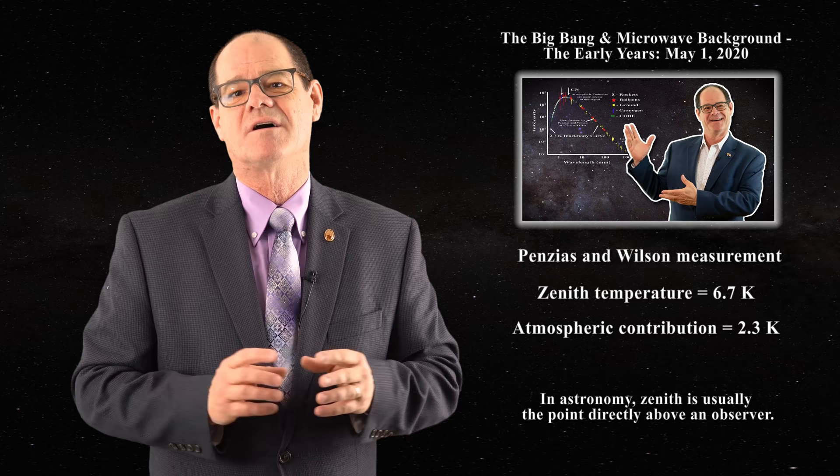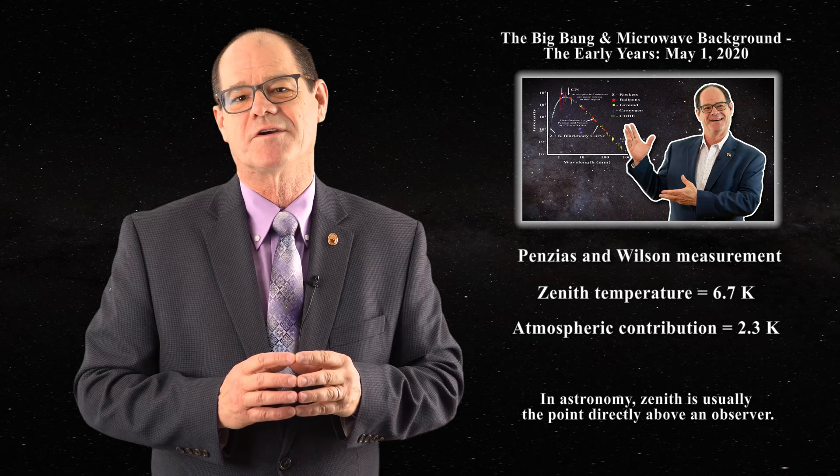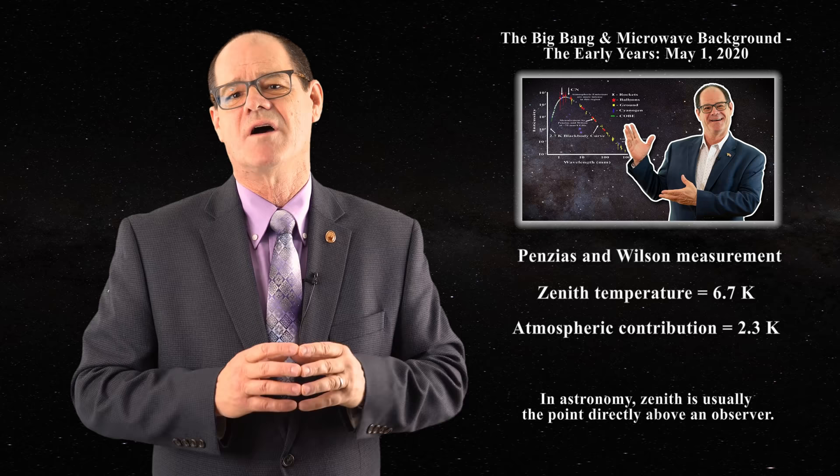As we learned in the previous video, when Penzias and Wilson made their discovery, they were well aware of the potential contributions of the Earth's atmosphere to their signal. At zenith, they measured a temperature of 6.7 Kelvin and attributed 2.3 Kelvin of that to the atmosphere. They were able to make that estimate by changing the elevation of the antenna relative to the horizon, and thereby modulate the signal originating from the atmosphere. As to the source of the primary signal, they were much too quick to accept the possibility that they had somehow measured the average temperature of the entire universe.